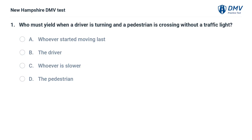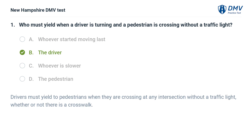Who must yield when a driver is turning and a pedestrian is crossing without a traffic light? A) whoever started moving last, B) the driver, C) whoever is slower, D) the pedestrian. The answer is B, the driver. Drivers must yield to pedestrians when they are crossing at any intersection without a traffic light, whether or not there is a crosswalk.